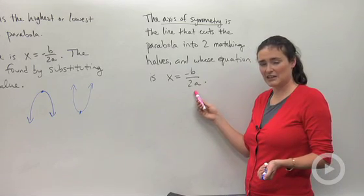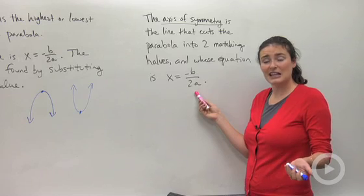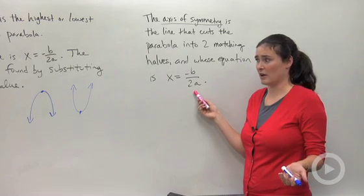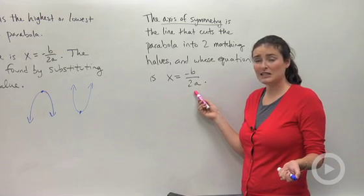Do you recognize that, the negative b over 2a piece? That's the same thing as the x-coordinate of the vertex. If I go back to my picture,